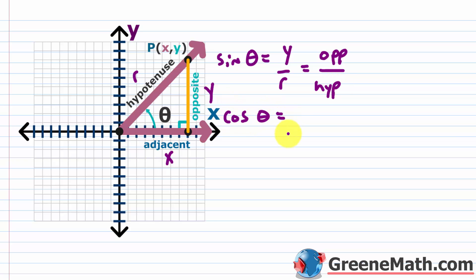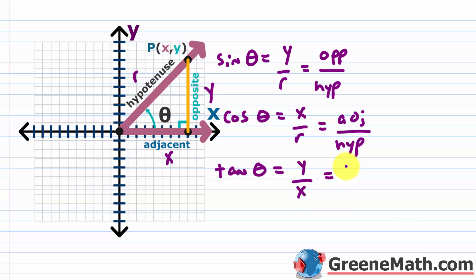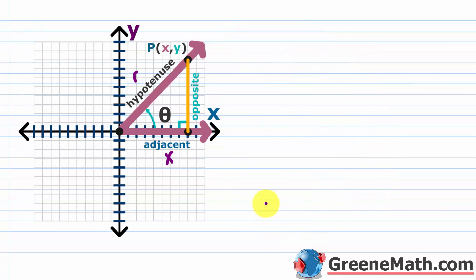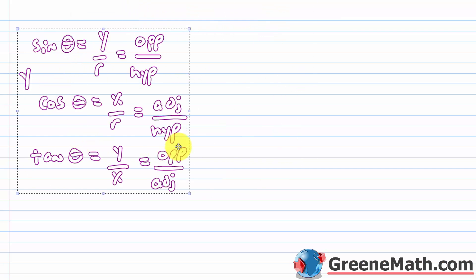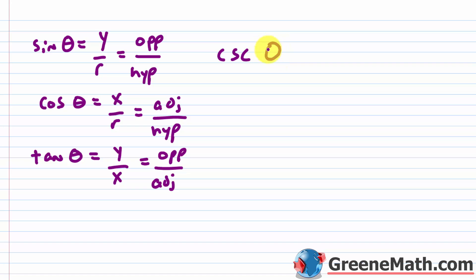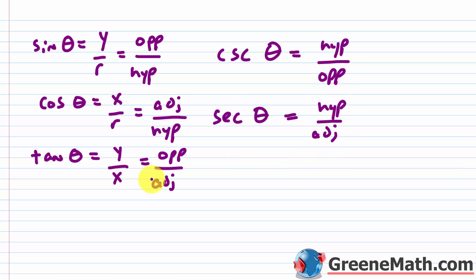Cosine of theta is the adjacent over the hypotenuse. Tangent of theta is opposite over adjacent. Flipping those gives the reciprocals: cosecant of theta is hypotenuse over opposite, secant of theta is hypotenuse over adjacent, and cotangent of theta is adjacent over opposite.